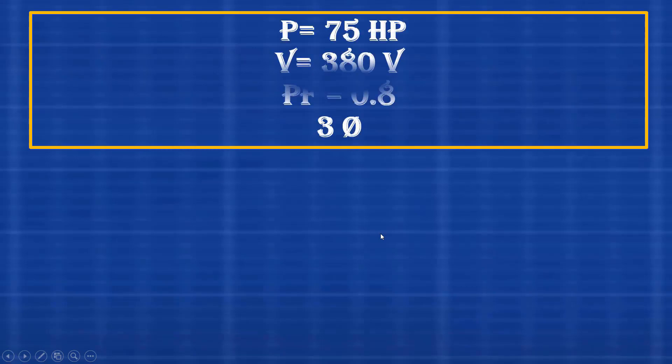In this example, the load is 75 horsepower. The voltage is 380 volts. The power factor is 0.8, and the connection is 3-phase.